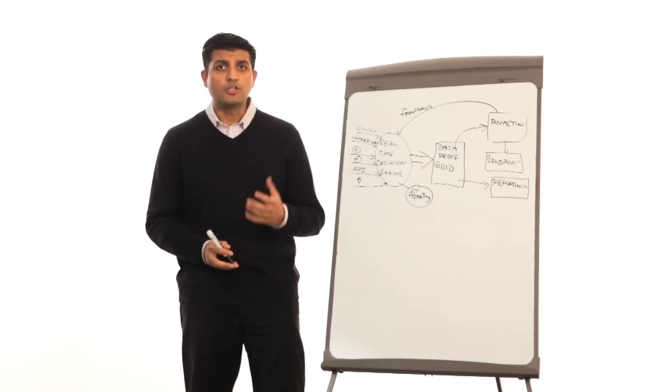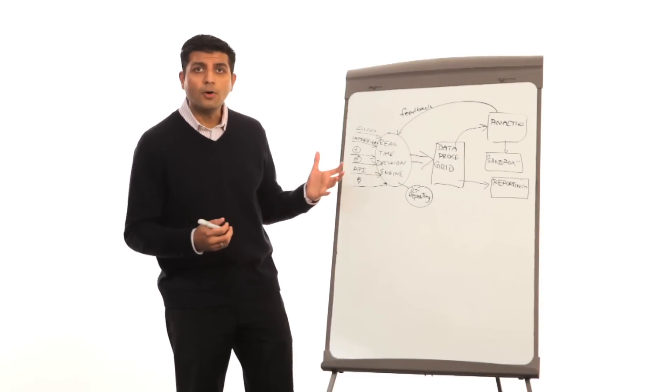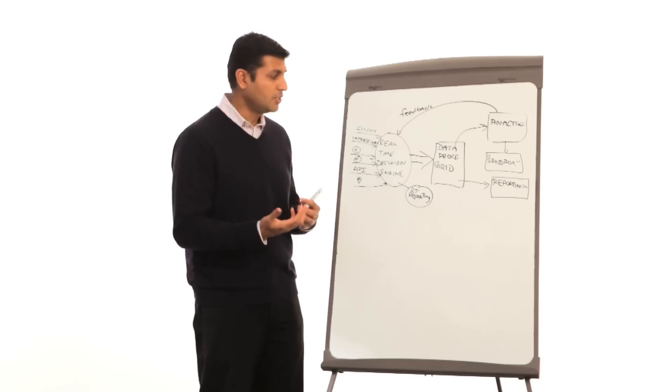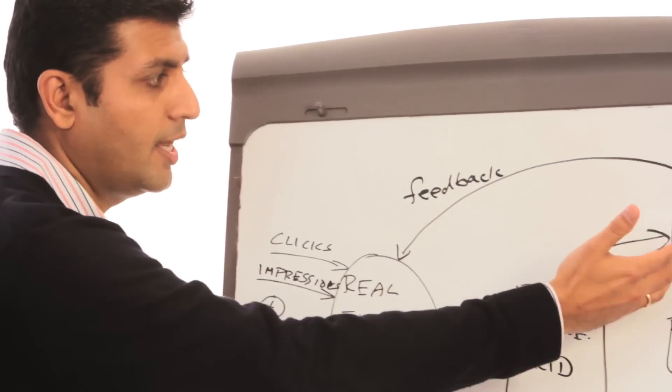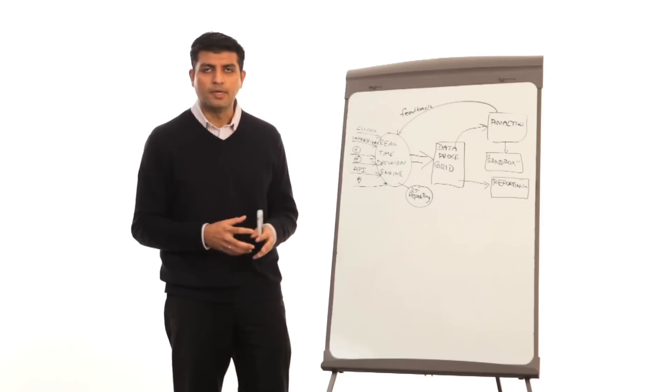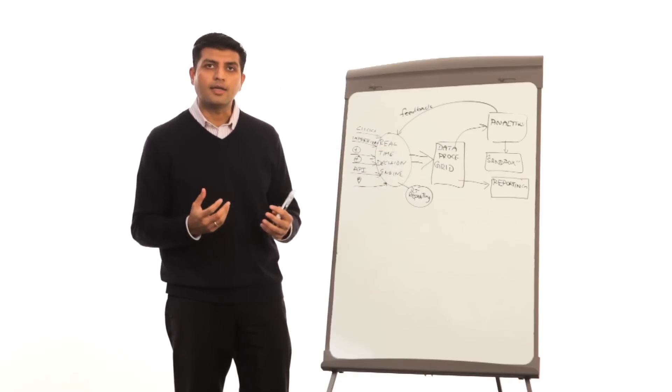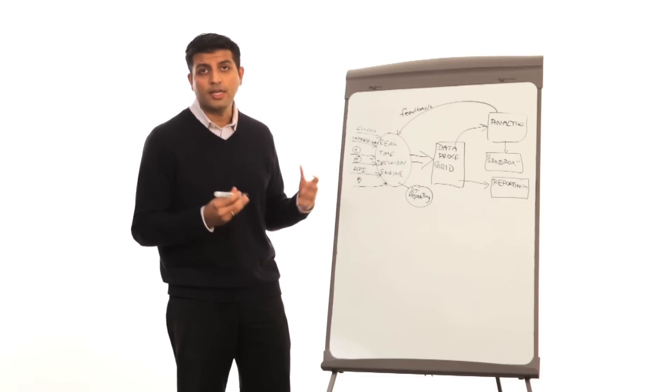A big data platform in a digital media type industry can be quite complex. As you can see, there are multiple components to that type of an architecture. You would have a real-time decision engine which is making decisions almost instantaneously. There's a massive data processing grid on the back end, which is feeding analytics and a reporting type subsystem. There's a lot of complexity associated with building and architecting this type of a solution, and I want to walk you through some of the considerations to keep in mind.